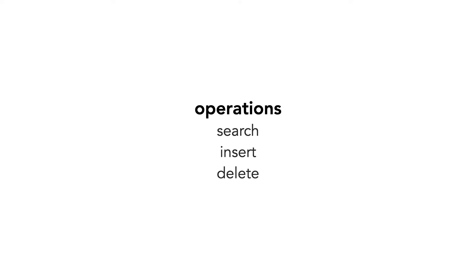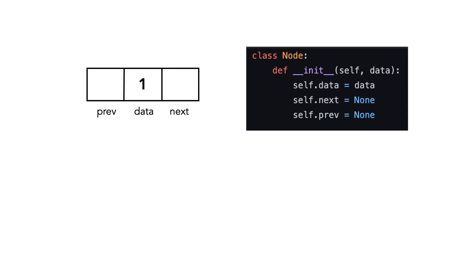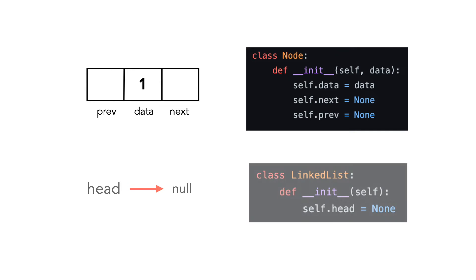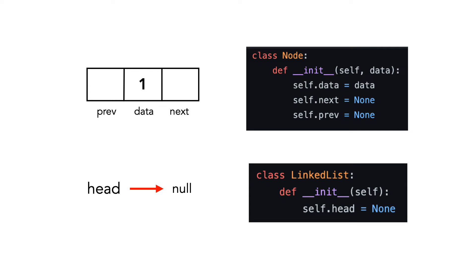Let's review common operations with linked lists. In this video, we'll cover search, insert, and delete. The code shown is from a working Python example linked in the description. First, let's start with our node object. There are three pieces of information we need to keep track of: data, next, and previous. The list starts with no object, so the head pointer points to null.